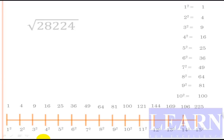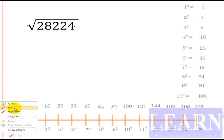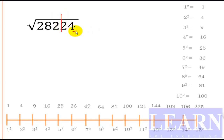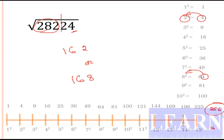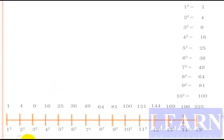The next number is 28224. If the last digit is 4, the square root ends with 2 or 8. The first part is 282. We know 16 squared is 256 and 17 squared is 289, so it is greater than 16 squared, giving us 162 or 168. Now 282 is closer to 289, so the answer is 168, not 162.